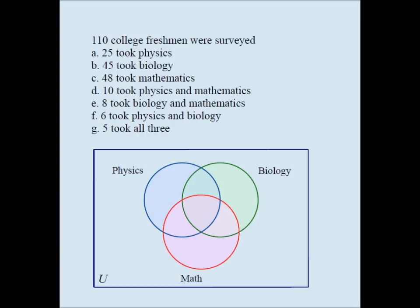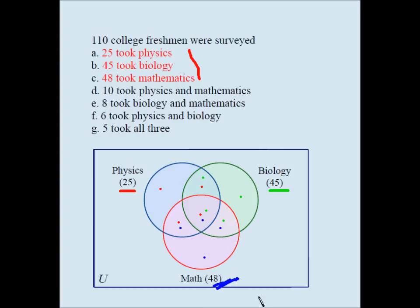Let's fill in the Venn diagram. Note it doesn't say 'only.' Twenty-five took physics — that means these four areas should add up to twenty-five. Forty-five took biology — that tells me these four areas should add up to forty-five. Forty-eight took mathematics — that tells me these four areas should add up to forty-eight. You really want to get that and reflect on it before continuing. You can pause the video now if you want.